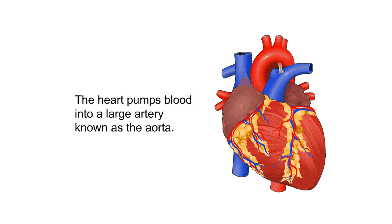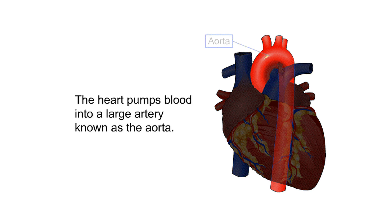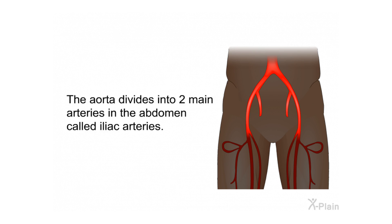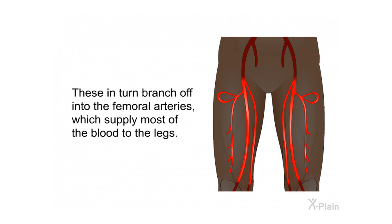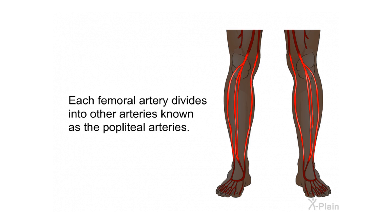The heart pumps blood into a large artery known as the aorta. The aorta divides into two main arteries in the abdomen called iliac arteries. These in turn branch off into the femoral arteries, which supply most of the blood to the legs. Each femoral artery divides into other arteries known as the popliteal arteries.